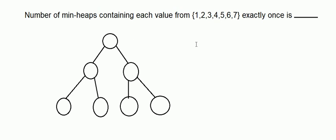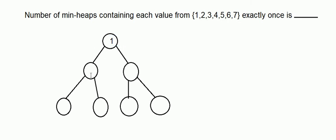Considering this fact, we have to fill these seven positions with the seven different numbers. The first part is that each value must be less than or equal to its children. If we follow this, we find that 1 must be at the root, because if some other value like 2, 3, 4, 5, 6, or 7 is at the root, it would not be a min-heap. So 1 must be here.